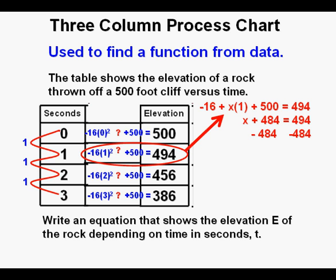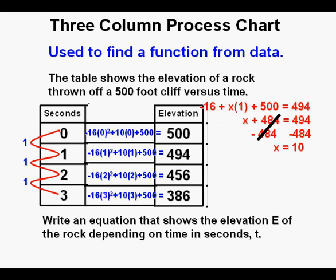To solve for x, we subtract 484 from both sides of the equation. 484 minus 484 cancel on the left side, giving us x equals 10. We plug 10 into our equations in the Process Column to see if it works, and since all the equations work out, we have our equation: e equals negative 16t squared plus 10t plus 500. That's determining a quadratic function using a three-column process chart.